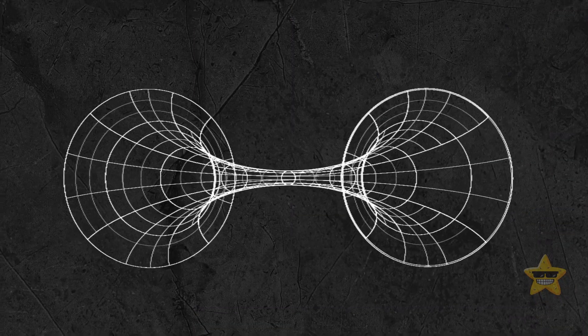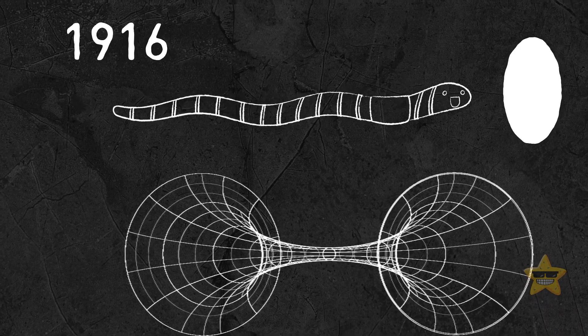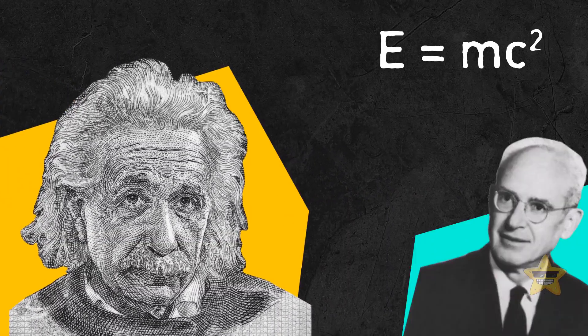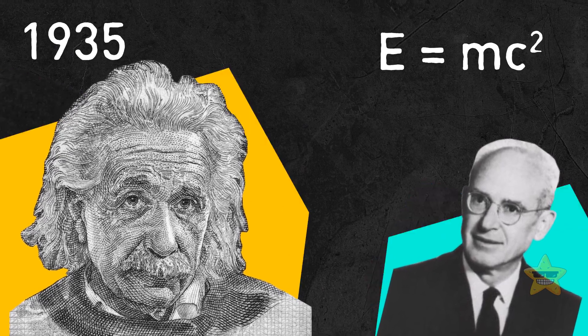The concept was first theorized in 1916, though back then people didn't call them wormholes. It was then studied by Einstein and his fellow scientist Nathan Rosen back in 1935. But it all started with Einstein's theory of general relativity.